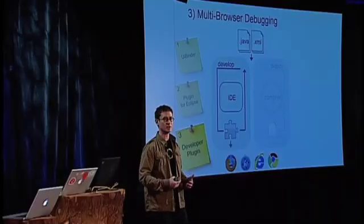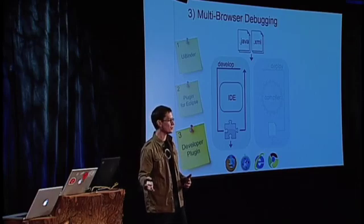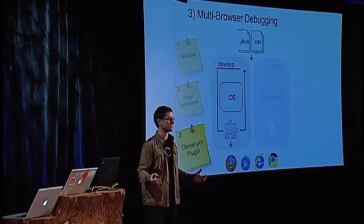We've also improved IDE support for other features — not just UIBinder. For RPC refactoring and the JavaScript Native Interface, we've added syntax highlighting for JavaScript and refactoring support, so you can actually refactor native JavaScript methods inside your code. You probably noticed that I was in Chrome the entire time while editing Java and XML files. This is thanks to the Google Web Toolkit developer plugin, which allows me to edit those files and continue to work in the browser — and it's not just Chrome. It works with any major browser I prefer: Safari, Firefox, or IE.